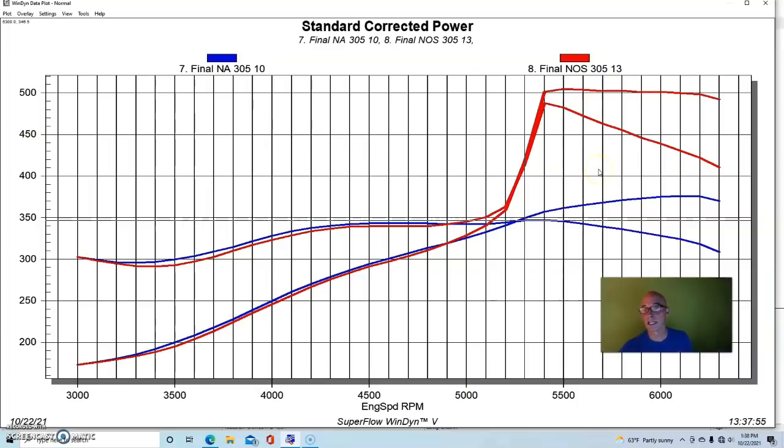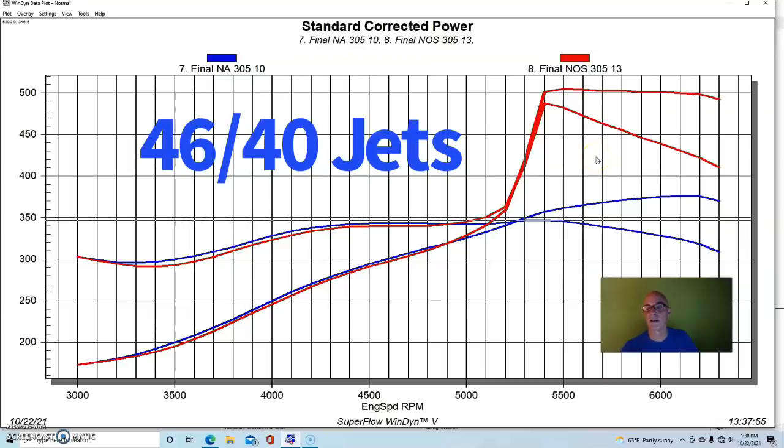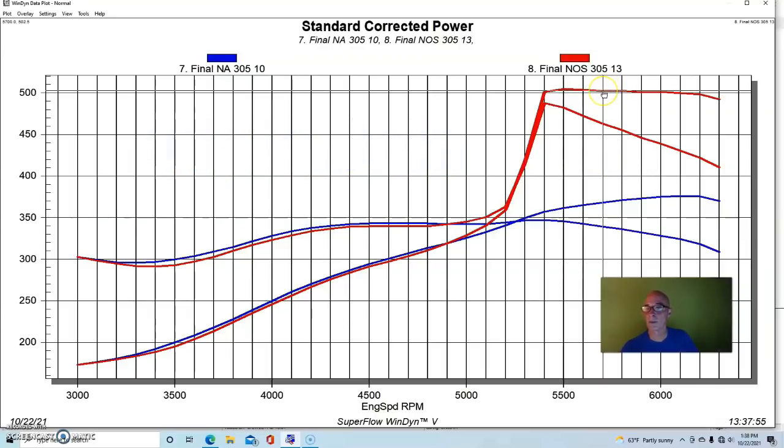We adjusted the fuel pressure going to the nitrous, the fuel supply of the nitrous setup to six pounds. We ran a 46 jet on the nitrous and a 40 jet on the fuel. So equipped, we also retarded the timing by three or four degrees.